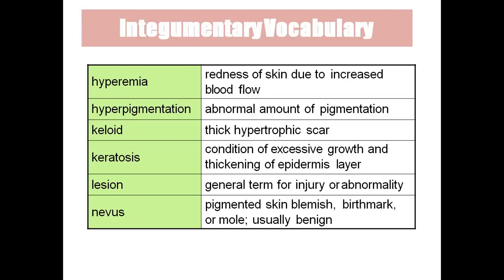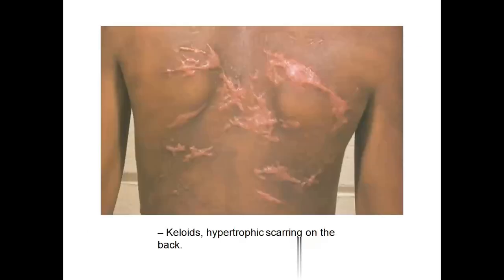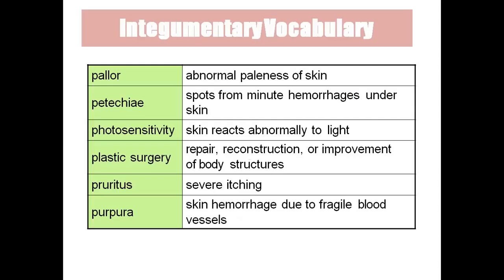Nevus is a birthmark or mole. Pallor means abnormal paleness of the skin. Petechia is very small pinpoint hemorrhages — also called pinpoint hemorrhage. Photosensitivity means the skin reacts abnormally to light; the skin becomes red and erythema takes place. Plastic surgery is the repair and reconstruction of body structures. Pruritus means severe itching, seen in cases of hypersensitivity and allergy.